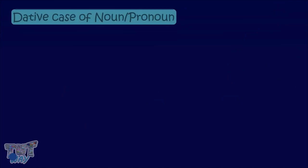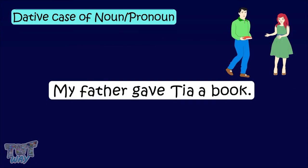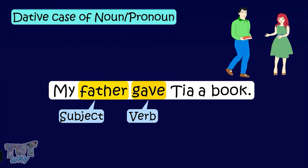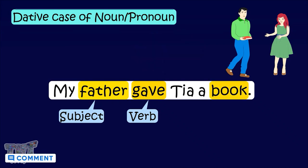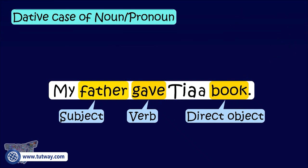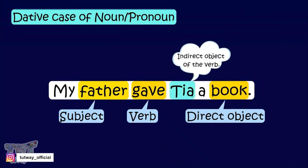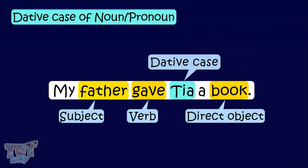Now we have to learn the last case of the noun, and it is the dative case. When a noun is used as an indirect object of the verb, it is said to be in the dative case. We will learn with examples. My father gave Tia a book. 'Father' is the subject, 'gave' is the verb, and he gave what? He gave a book, so 'book' is the direct object. And gave the book to whom? Gave the book to Tia. So 'Tia' is the indirect object of the verb and is said to be in the dative case.